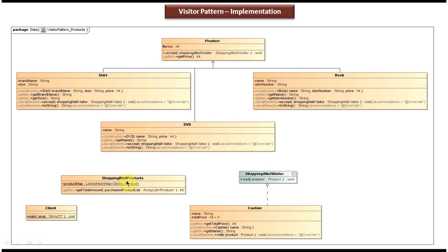ShoppingMallProducts has a product map containing all the products available in the shopping mall. It has a getTotalAmount method where you pass the purchased product list, and it calculates and returns the total amount to the caller. There is also a Client class with a main method, which is used to demonstrate this visitor design pattern. I will open Eclipse and show you the code.